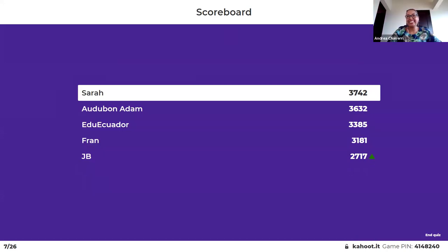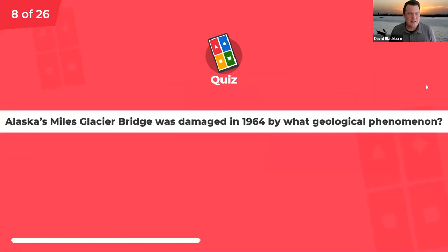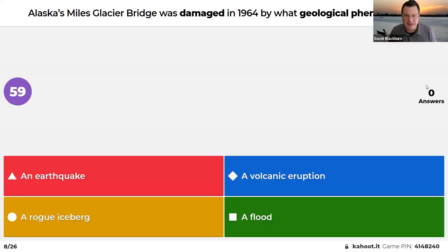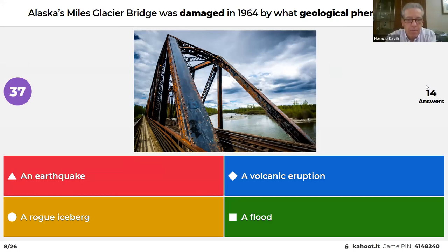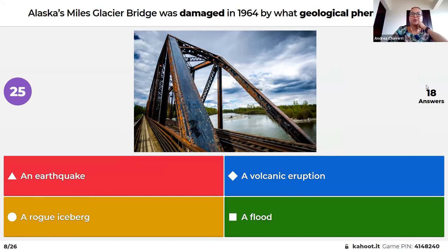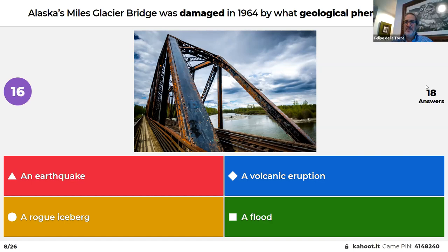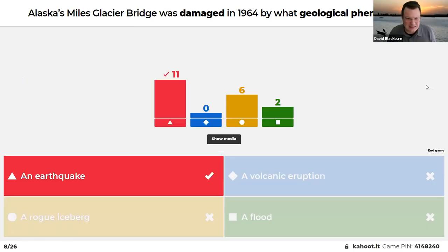A popular attraction near Cordova, Alaska — the Miles Glacier Bridge — was damaged in 1964 by what phenomenon: an earthquake, volcanic eruption, a flood, or a rogue iceberg? The bridge crosses the Copper River. The panelists playfully debated a rogue iceberg. The answer was an earthquake — the major 1964 Alaska earthquake. There may well be some Holbrook participants from Alaska in the audience.